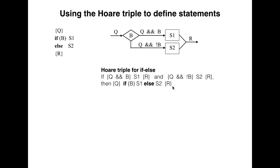To prove that executing the if-else statement with q true ends with r true, show that executing s1 with q and b true terminates with r true, and executing s2 with q and not b true terminates with r true. This should be self-evident, common sense.